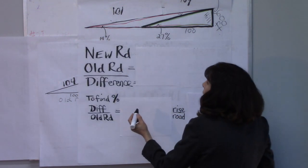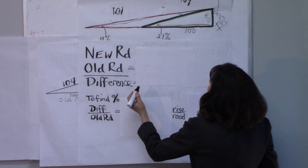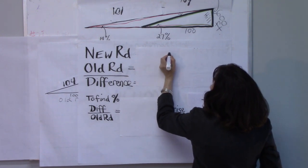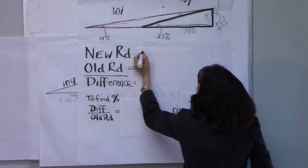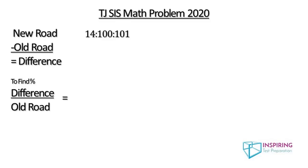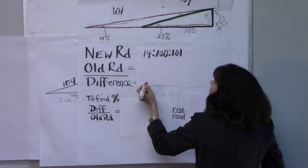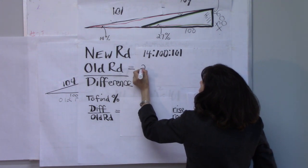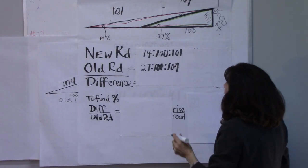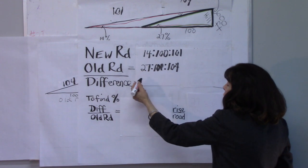Now remember on the previous screen, when we figured out the length of the new road, we had a proportion of 14 relative to 100 and got a road length, relative road length of 101. And for the old road, we had a rise of 27, a run of 100 and a length, a relative ratio length of 104. Now, how do we find the old road length?